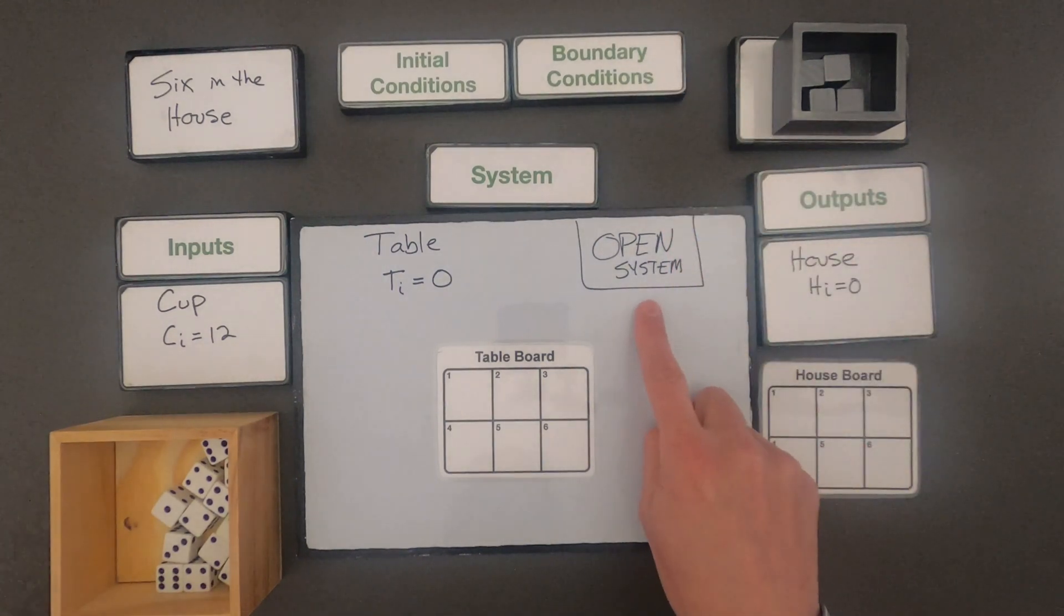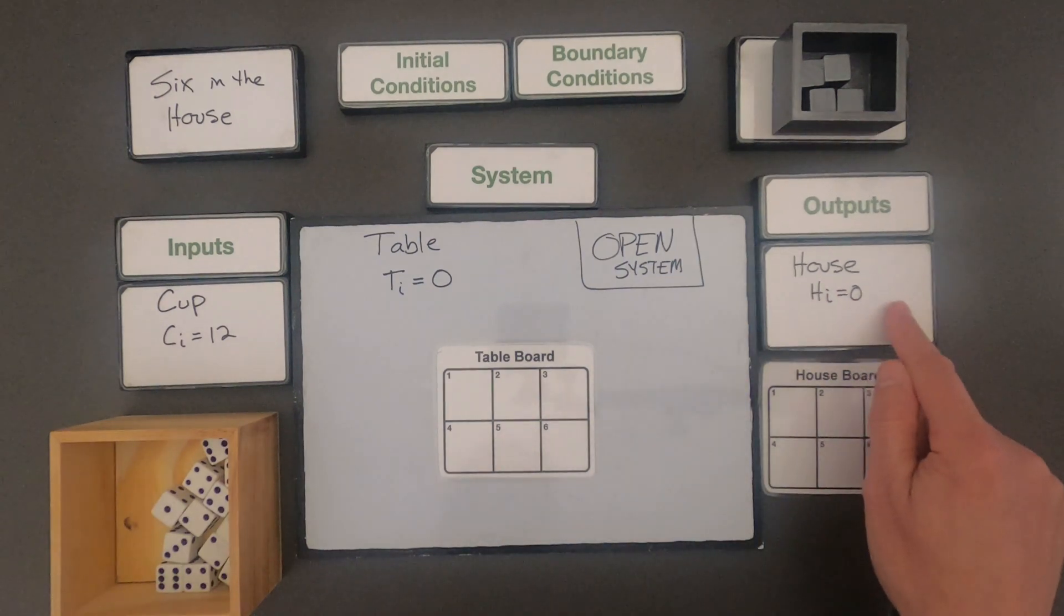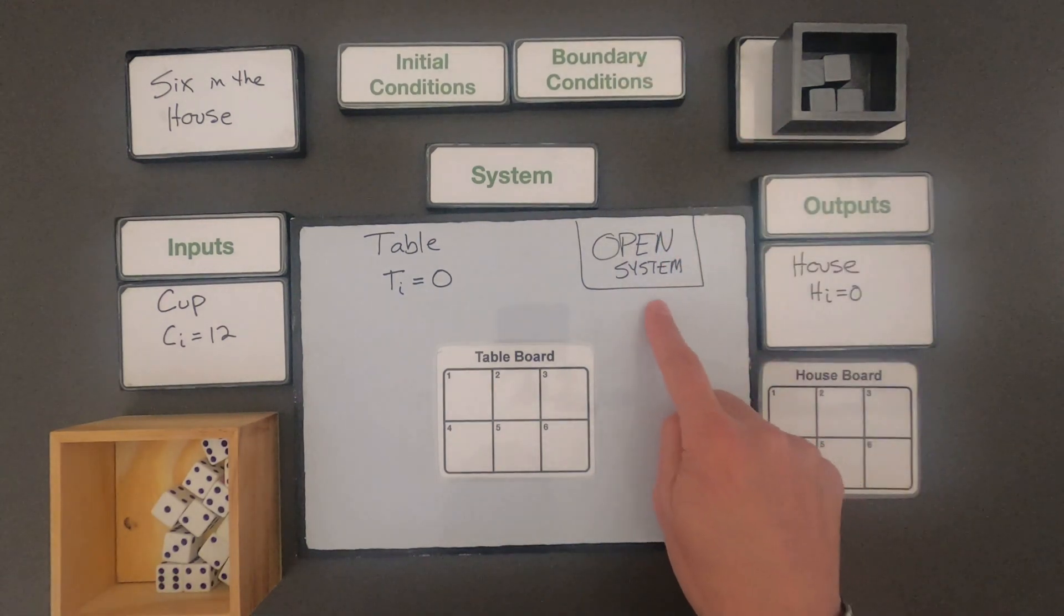So the boundary conditions is right here. So this is an open system. That means that when I roll the dice, dice can come into the system and can go out of the system. So those are the boundary conditions. It's going to tell me about the boundary of the system. Is it open or closed?